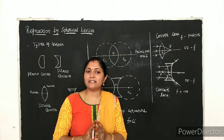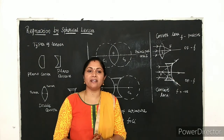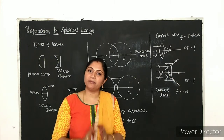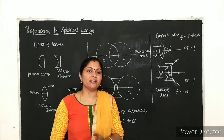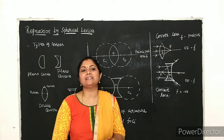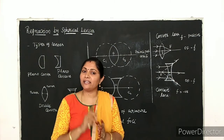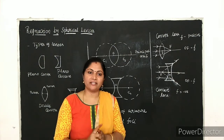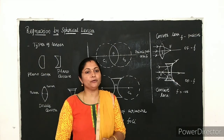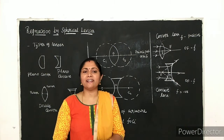First, let us understand what lenses are. A lens is a transparent material which contains at least one spherical surface in it, and the lens must have one spherical surface.